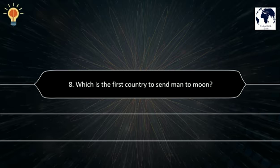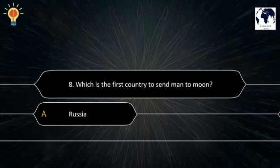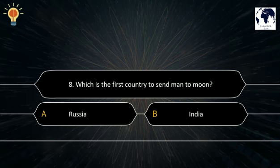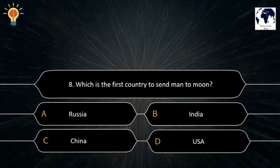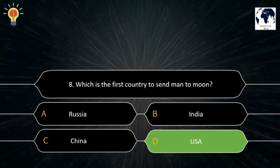Question number 8. Which is the first country to send a man to the moon? A. Russia. B. India. C. China. D. USA. The correct answer is D. USA.